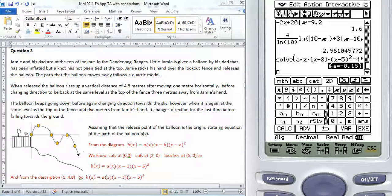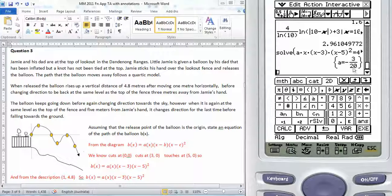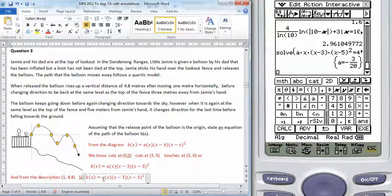So that's my value of a. Negative three on twenty. State an equation for the path of the balloon. My equation then becomes